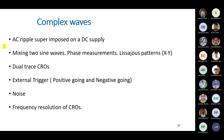Complex waves — AC ripple superimposed on a DC supply — can also be measured: DC plus AC ripple, or pulses on DC. How accurately you can measure frequency depends on your system bandwidth. If your system has more bandwidth, you can display the signal more accurately and get better results.